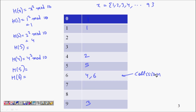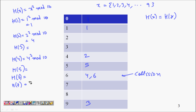This illustrates the problem: when using a hash function, there is a chance that h(x) equals h(y) for different inputs, causing a collision. h(7) = 7² mod 10 = 49 mod 10 = 9, so 7 maps to cell 9.